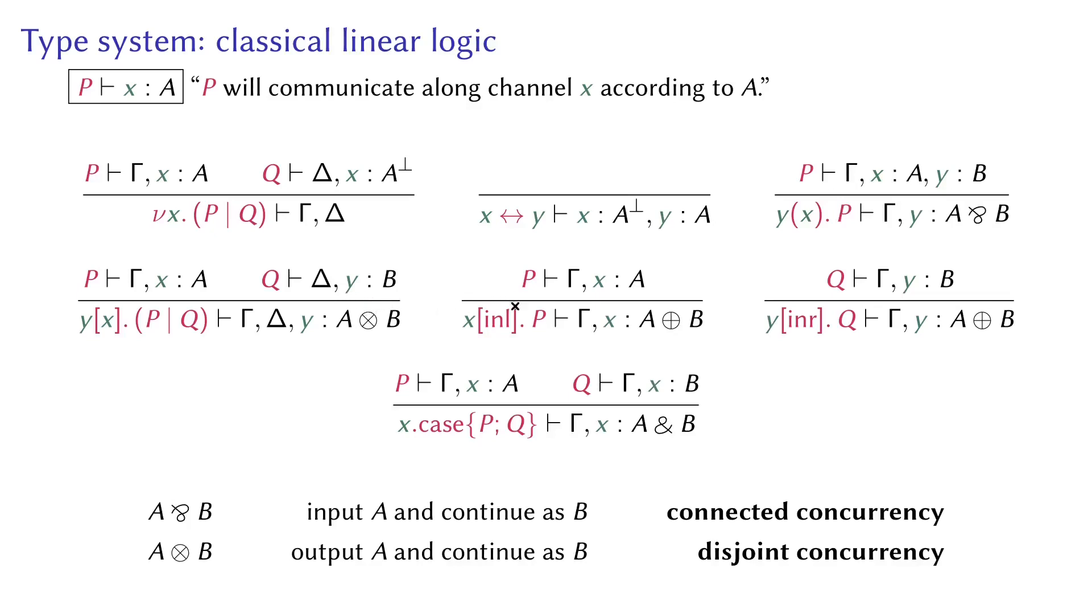Following are the three additive fragment rules. If I have a process P that behaves as A, I can make a process that selects A out of A and B, and then behaves as A, which is P. Similar for B. And if I have two processes, each behaving A and B, then I can make a process that accepts a choice of A or B, and then behaves as such.